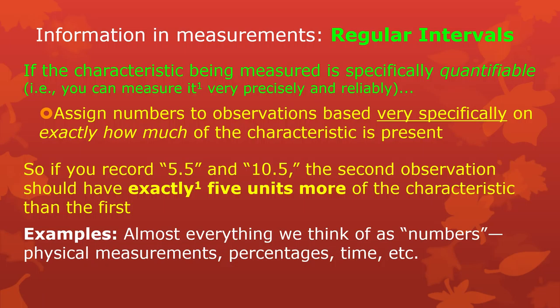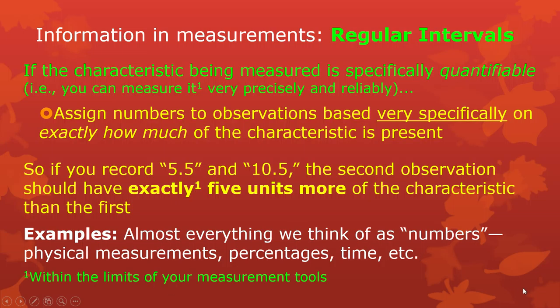Examples of this kind of scale are pretty much everything we think of as measurement and numbers outside of the social sciences — especially any physical measurements, any percentages, any time you count anything, seconds, minutes, hours, years. These things all have regular intervals. Just because you can't measure precisely due to your tools doesn't mean it's not a numerical or regular interval type system.